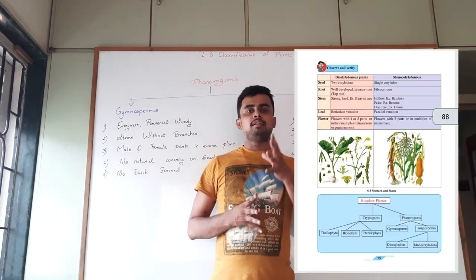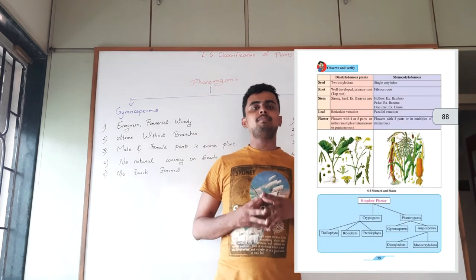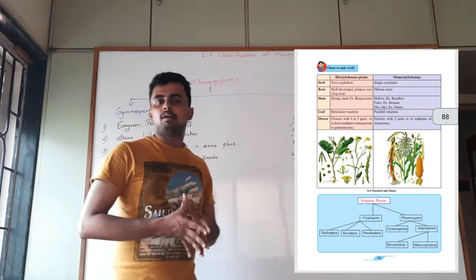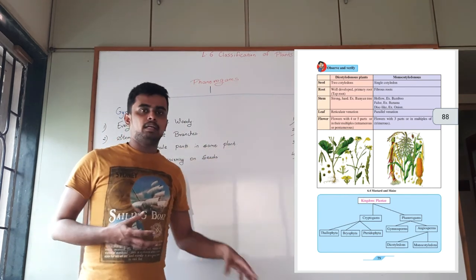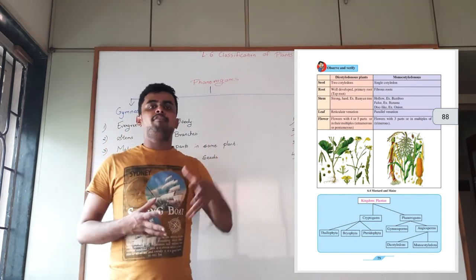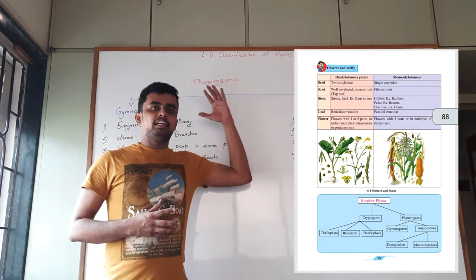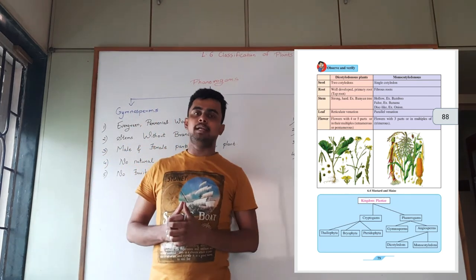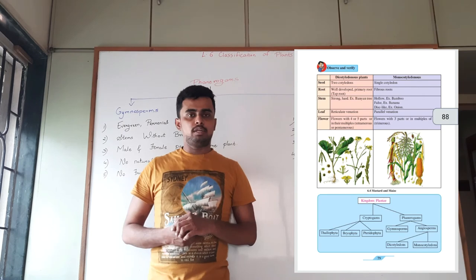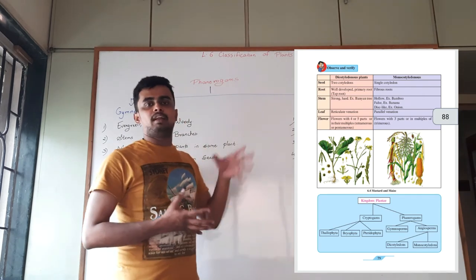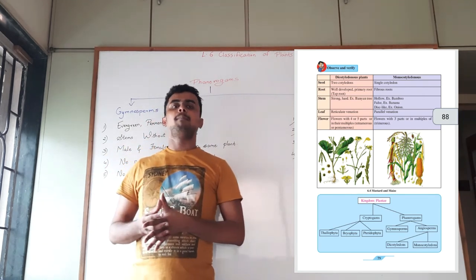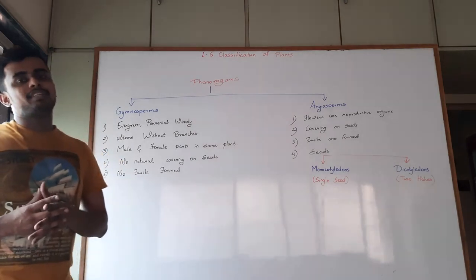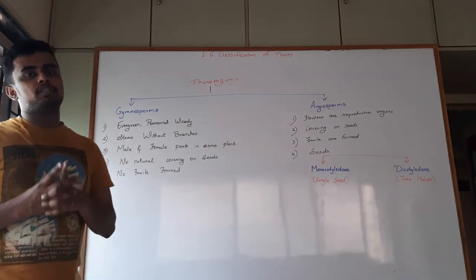On page number 79, which I am showing on the video right now, there is a very important page for you. The difference between monocotyledons and dicotyledons is explained and examples are also given, so refer to this page to understand more. Thank you for watching this video on the chapter 'Classification of Plants.'